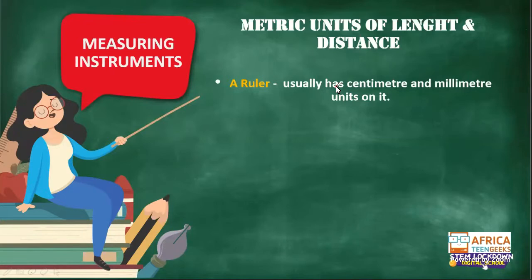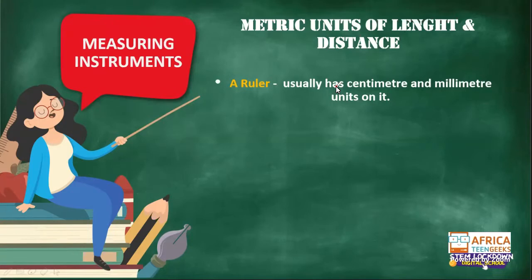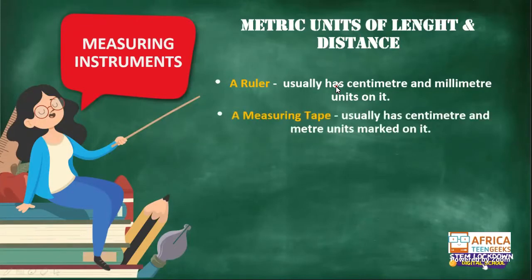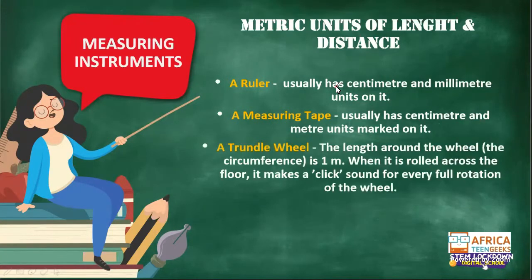The first thing we use every single day in class is a ruler, which usually has centimeters and millimeter units on it. Sometimes you get ones with inches, but the ones we use here have centimeters and millimeters. The next one most people mentioned is a measuring tape, which usually has centimeters and meters units marked on it. And then we also have a trundle wheel.